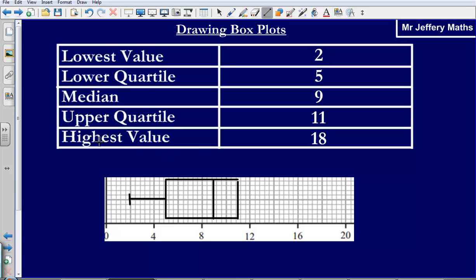And then the highest value is 18, and that is represented by the end of the whisker that comes out of the box. So the whisker coming out of the box ends at 18, and my box plot diagram that represents this information would look like this.